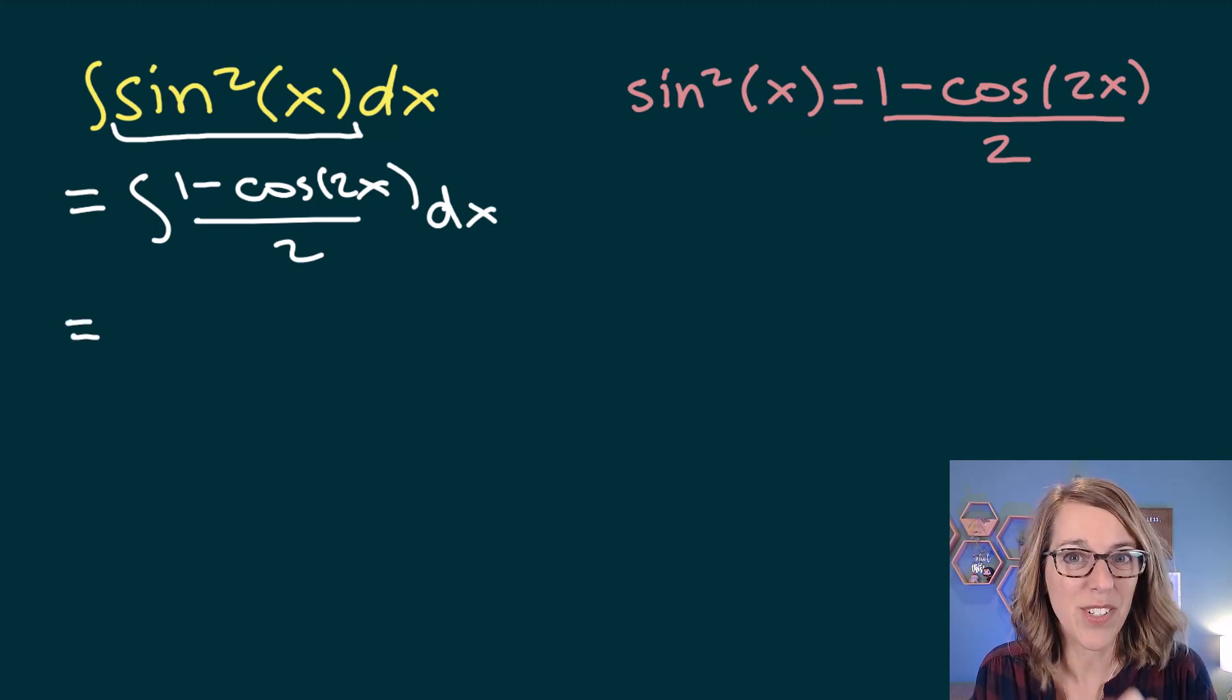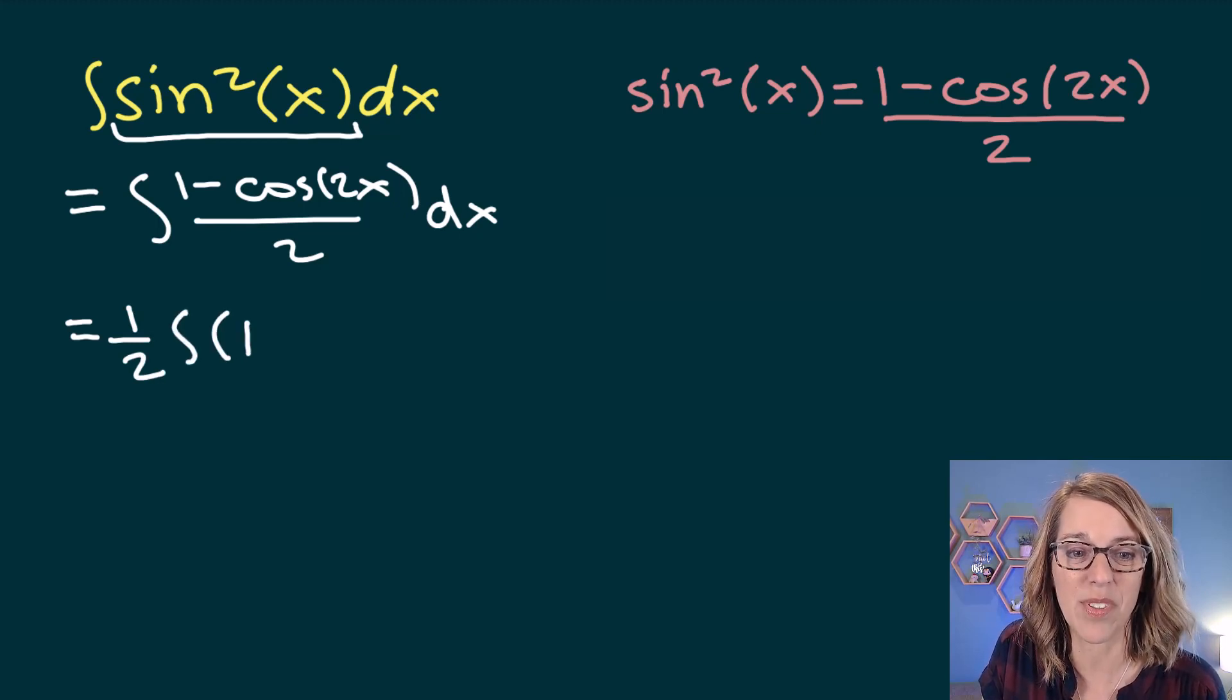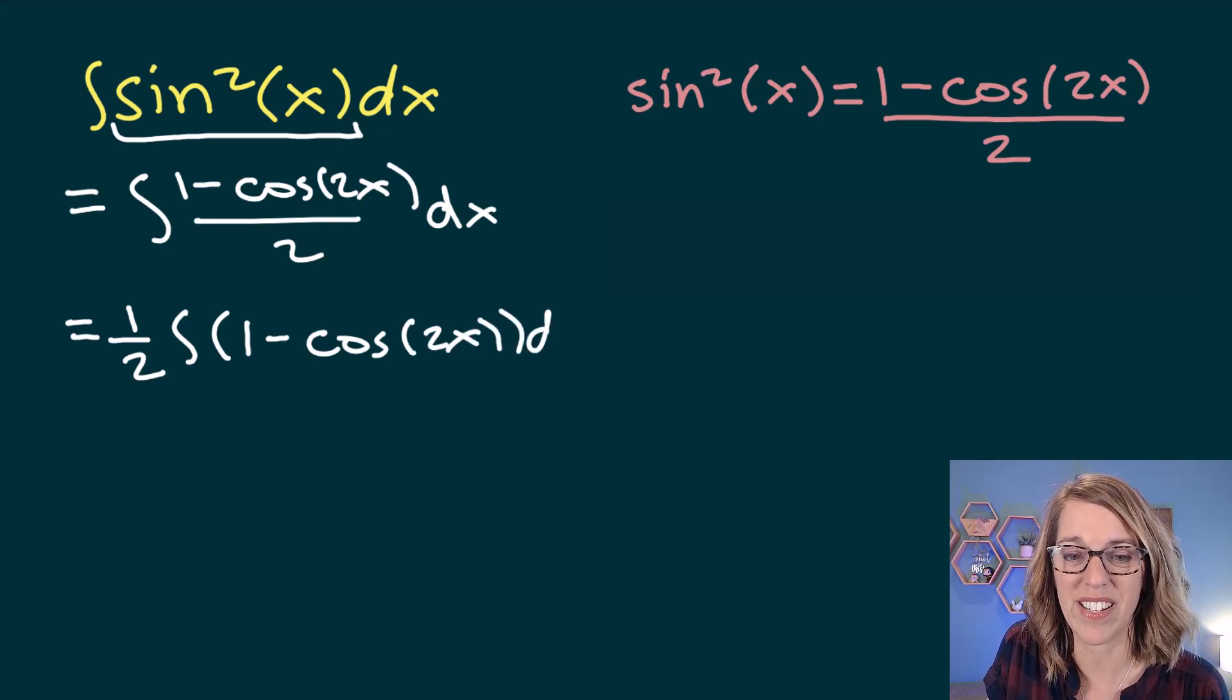Now I can pull the divided by 2 outside of my integral as a 1 half. So I'm going to write 1 half integral, and that leaves me on the inside with a 1 minus cosine 2x, and then my dx.